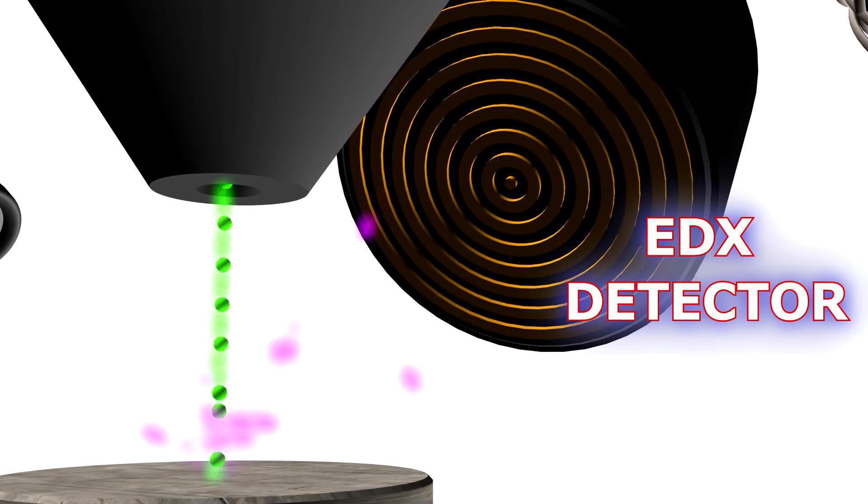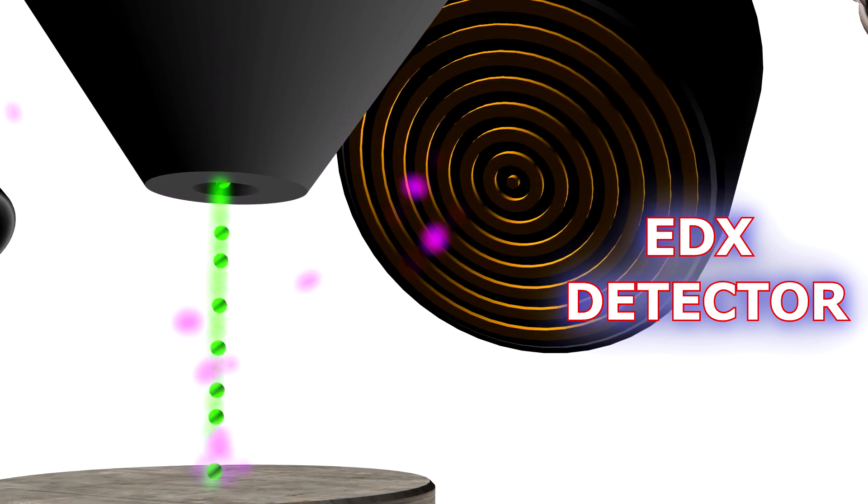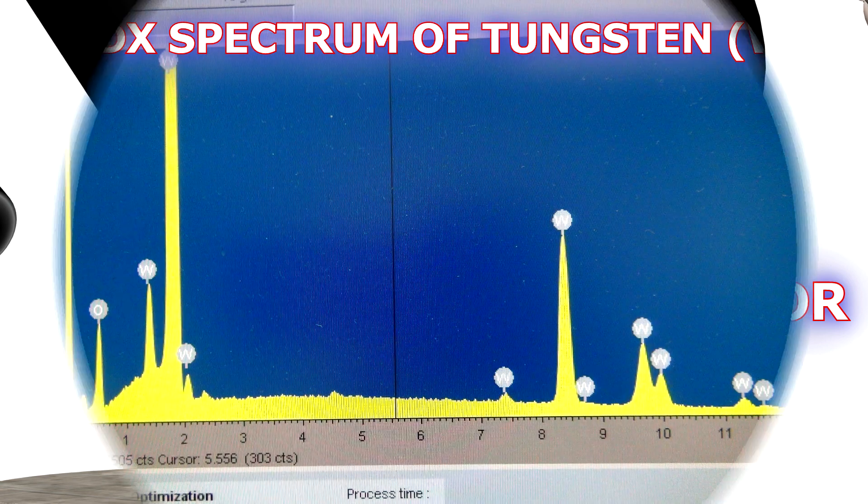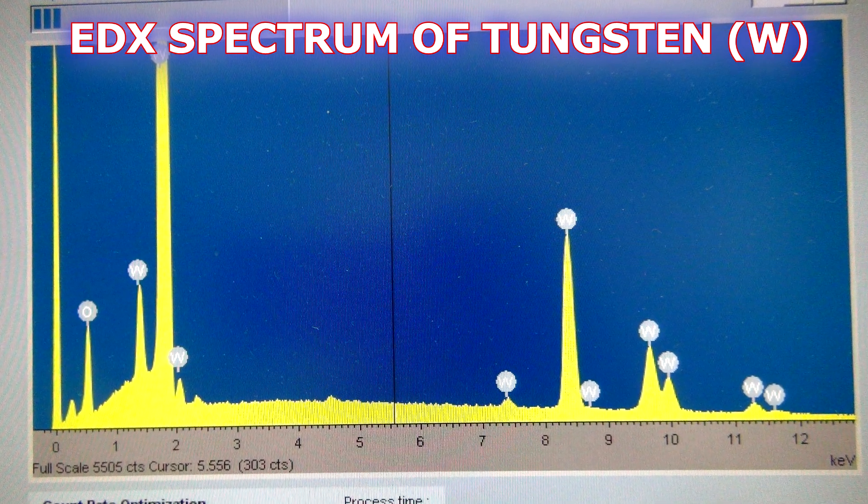By using energy dispersive X-ray detectors, we can collect the signal and calculate the exact composition of the sample. As you can see, the top layer of the sample consists mainly of tungsten...